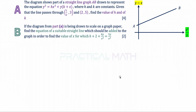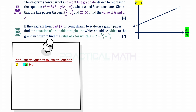In part A, we are given a diagram where the vertical axis is y minus x instead of the usual y-axis, and the horizontal axis is x squared over y instead of the usual x-axis. Since both axes are very different from the usual coordinate geometry questions, this is obviously a linear law question. Let's go back to our linear law formulas. We need to convert the non-linear equation to a linear equation expressed in the form capital Y equals M capital X plus C.